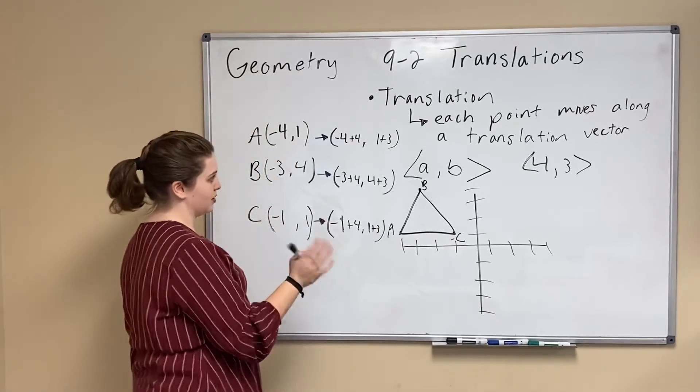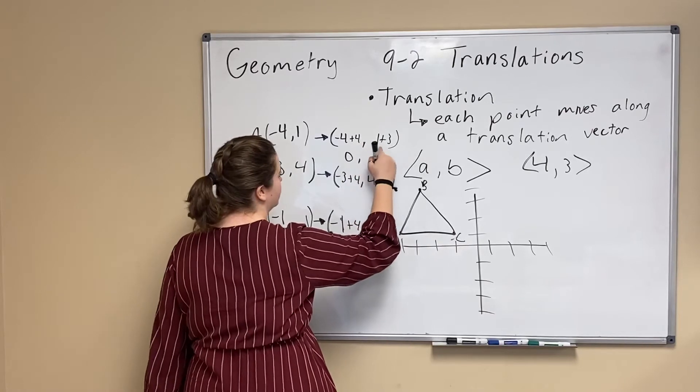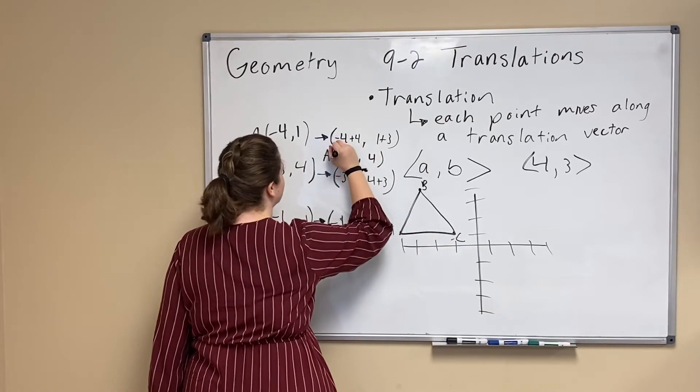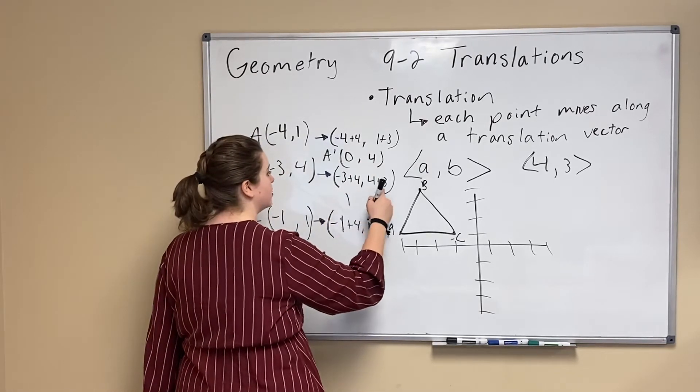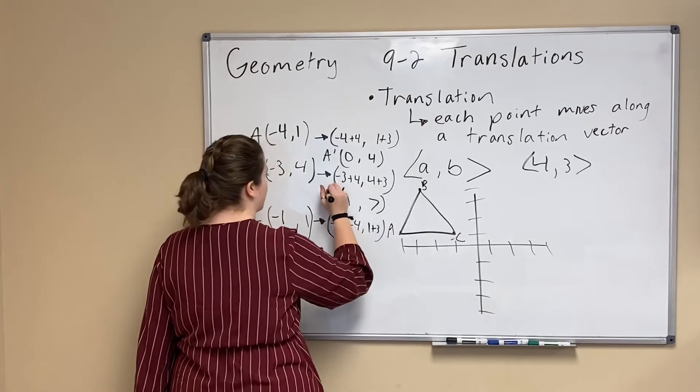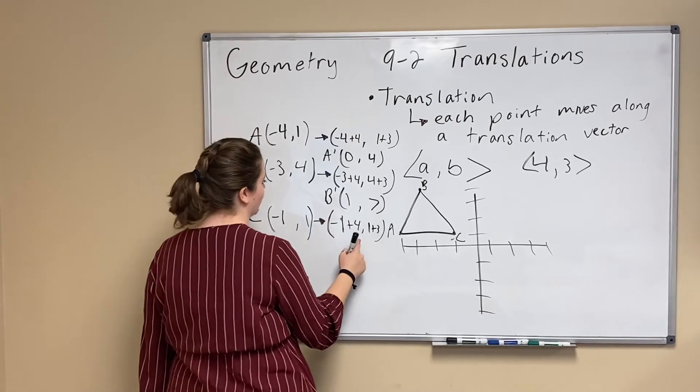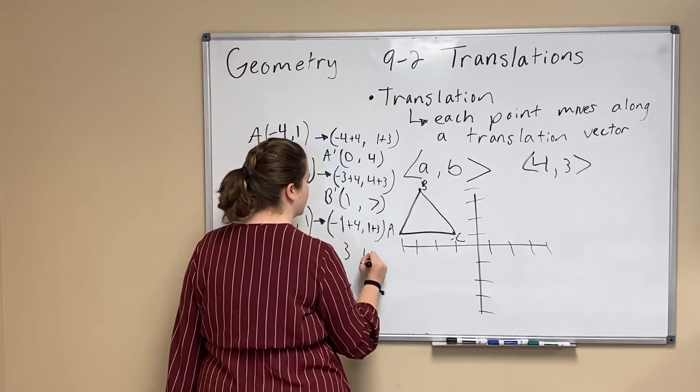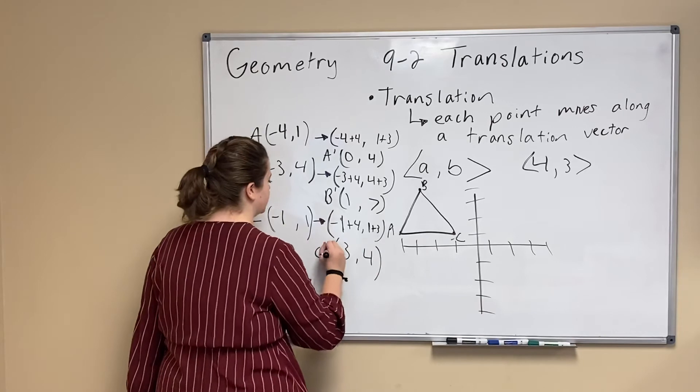We're going to simplify those so that we get our new points. -4+4 is 0, 1+3 is 4, so (0,4) is our A'. -3+4 is 1, 4+3 is 7, so that's going to be our B'. -1+4 is 3 and 1+3 is 4, that's going to be our C'.